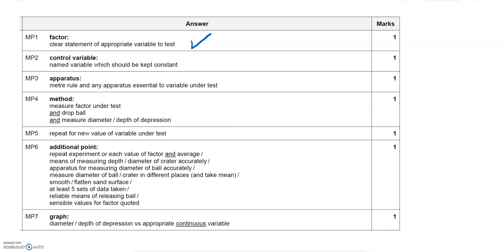You can see that we've clearly stated the variable we're going to change, in this case that is the mass of the ball. We've also named some variables that we're going to keep constant. They only wanted one but we've done multiple. We've also mentioned a meter rule and also the mass balance, so that's done.